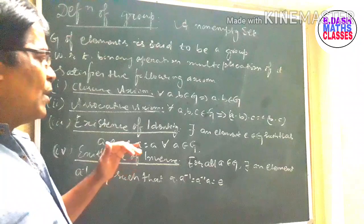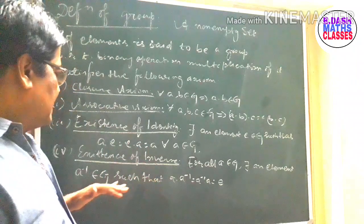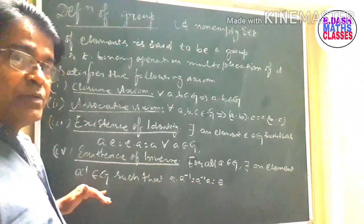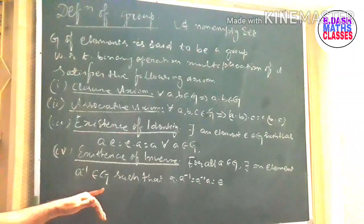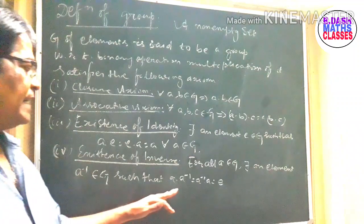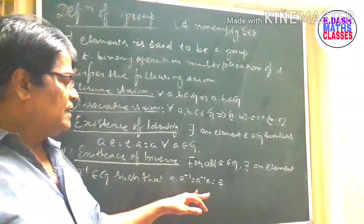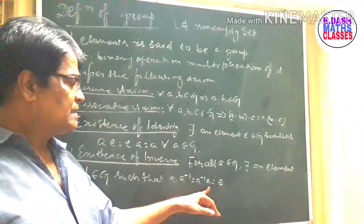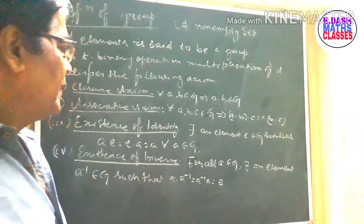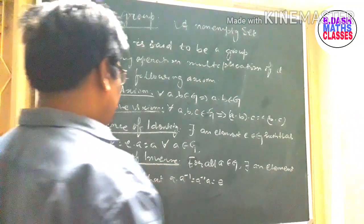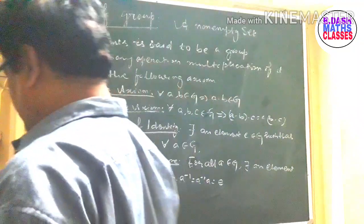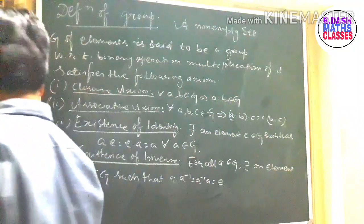Then the existence of inverse: for all a belonging to G, there exists an element a⁻¹ belonging to G such that a·a⁻¹ = a⁻¹·a = e, the identity element. With these four conditions, we can say a non-empty set G is a group.